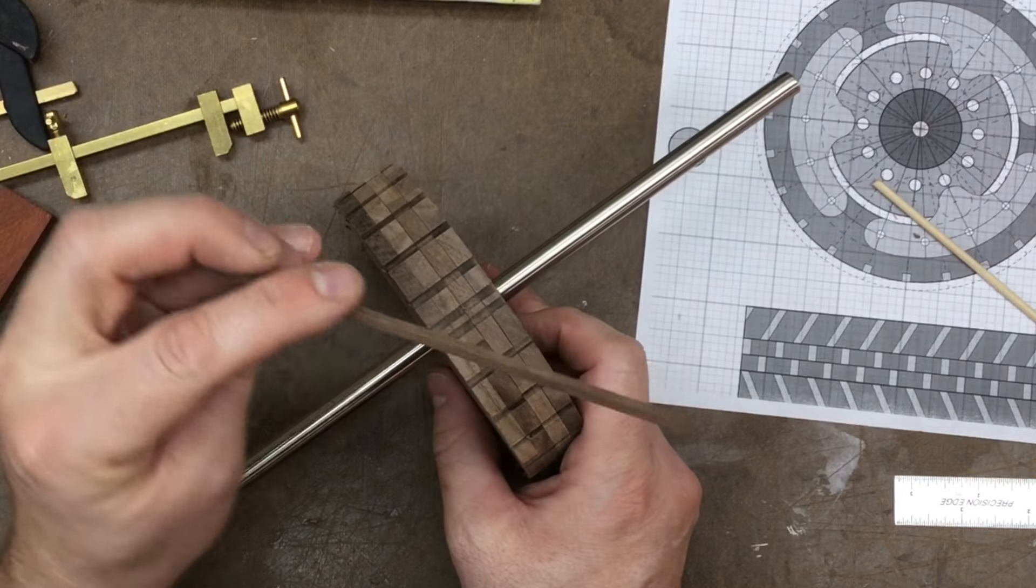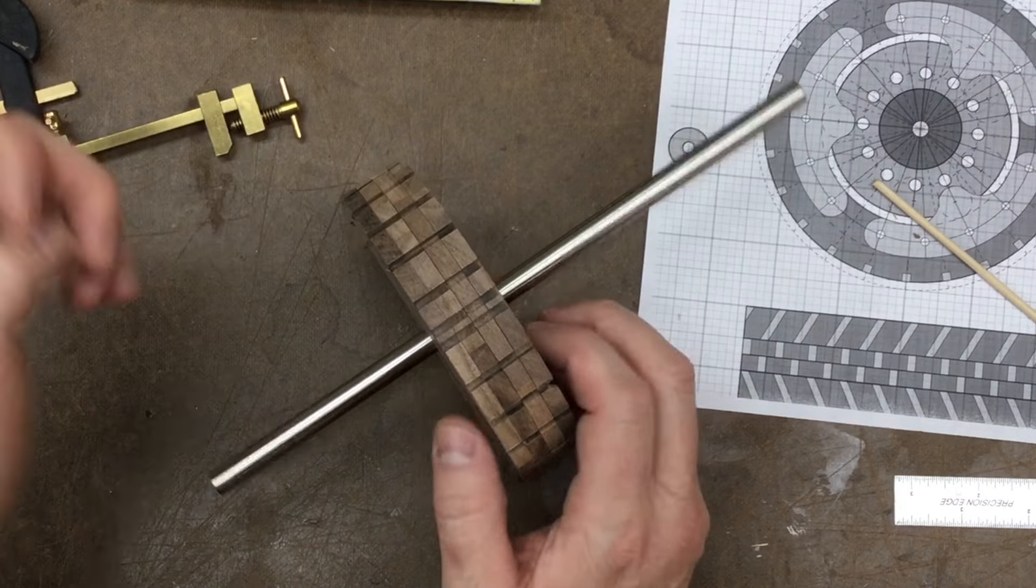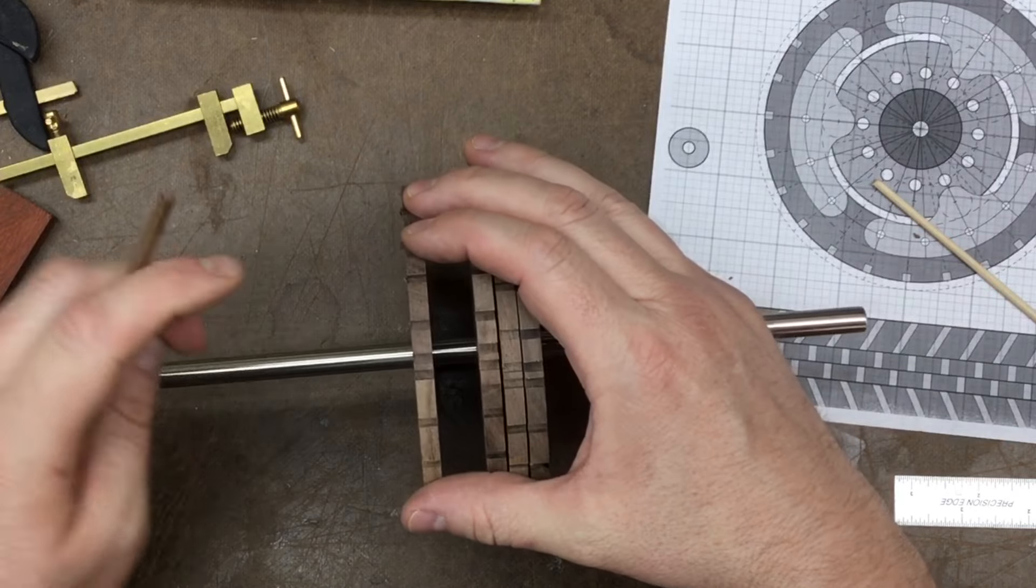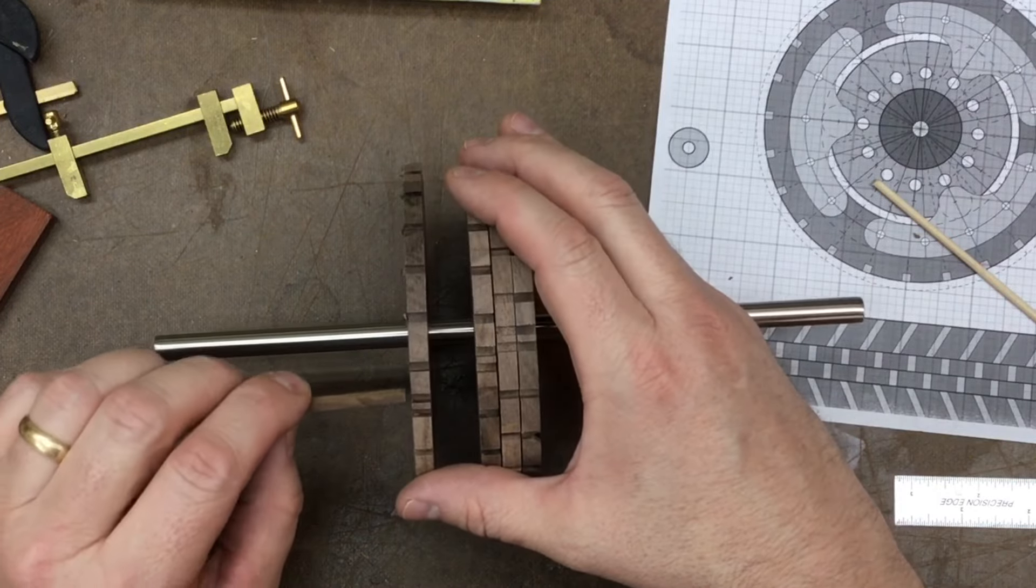So instead what we're going to do is take this little thin strip of walnut. I'm going to shave it down to the correct thickness and we are going to infill the four spots where there shouldn't be a groove.